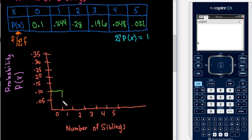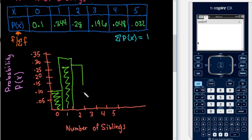10% have zero siblings. 34.4% or 0.34, so I would go up to where I feel 0.34 is, have one sibling. 28% have two. 19.6% have three. And again, I'm just approximating on this. In the real world, you would probably use Excel or something to come up with a much nicer display. We have about 5%, 4.8% have four, and 3% have five.